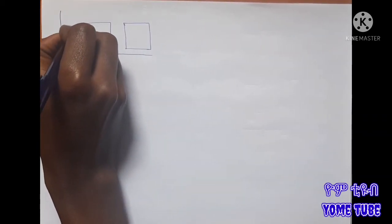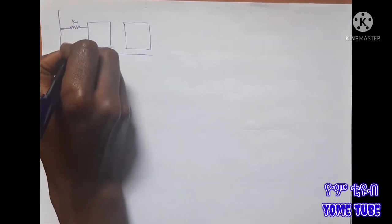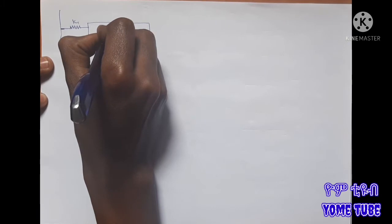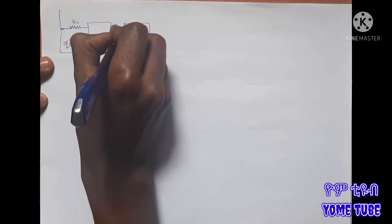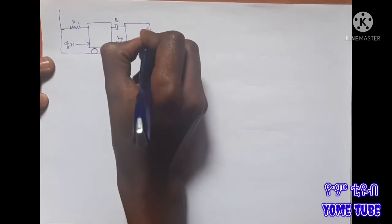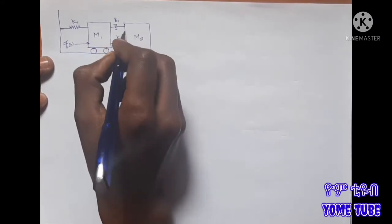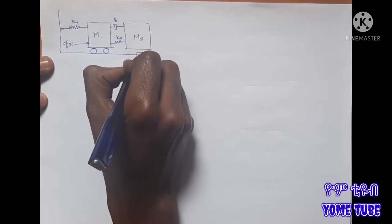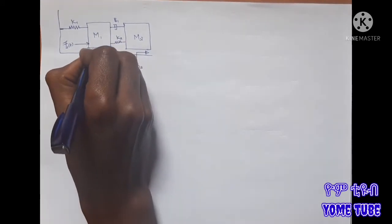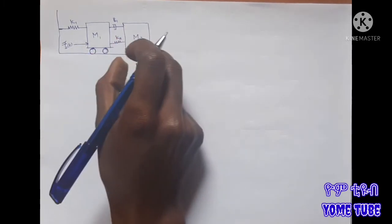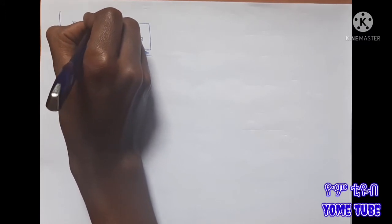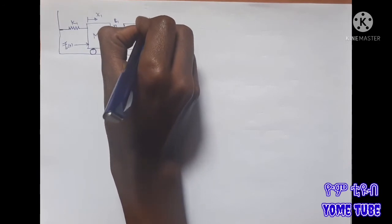Spring one with constant k1, and spring two. Between these two masses, and also the damper considered for viscous friction. Mass one and mass two. The position of M1 is x1, and the final function is x2.